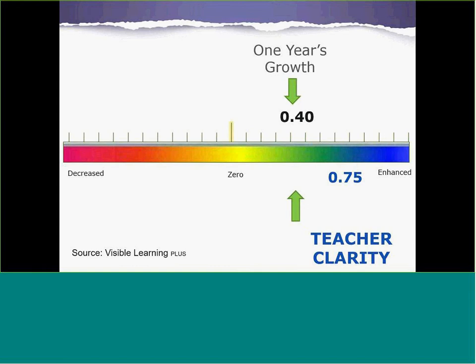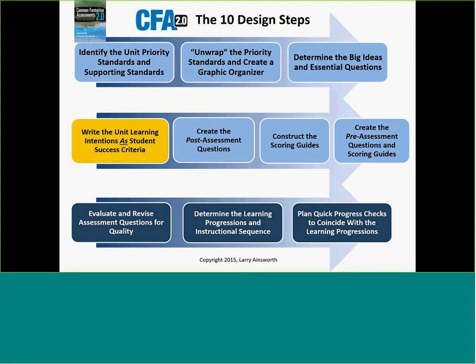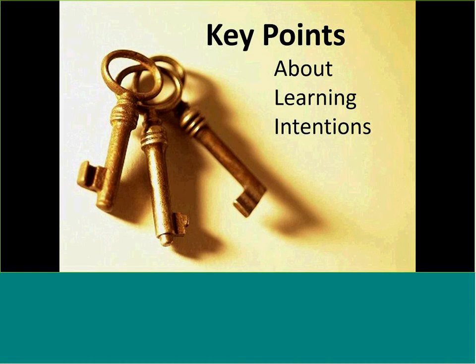That's why this is such an important piece now that everyone is talking about learning targets and teacher clarity. We really need that clarity for everything we do in education, but in particular when we're designing our assessments. This is the new step four. Learning intentions are derived from the unwrapped priority standards, but they're not just the standard statements — they also include the concepts and skills the kids are to learn, the essential questions students are to respond to by the end of the unit, and the academic vocabulary for the unit.